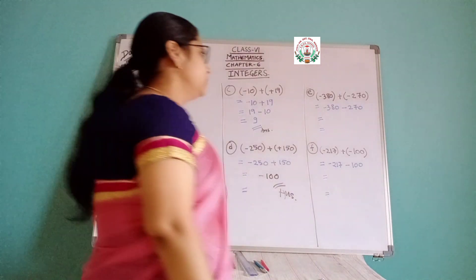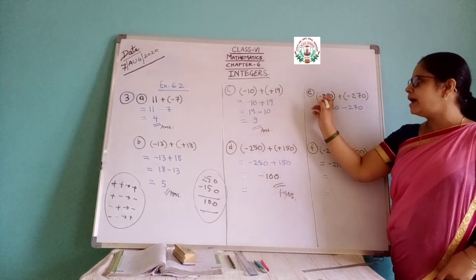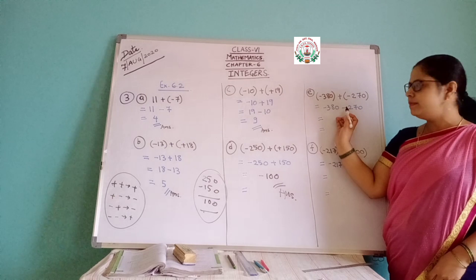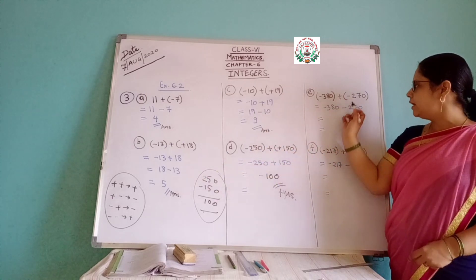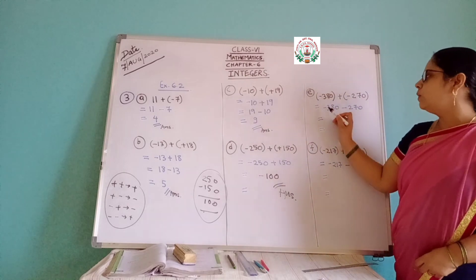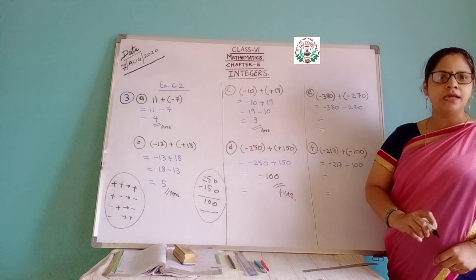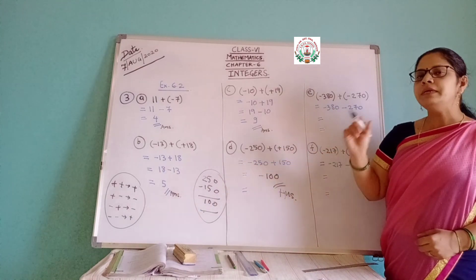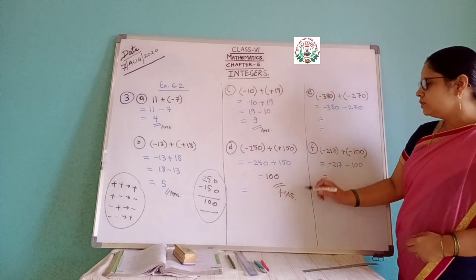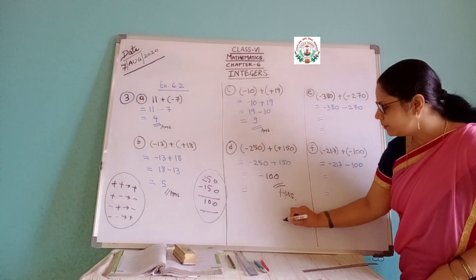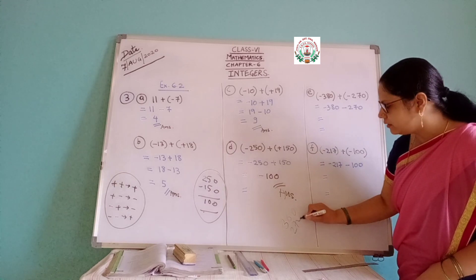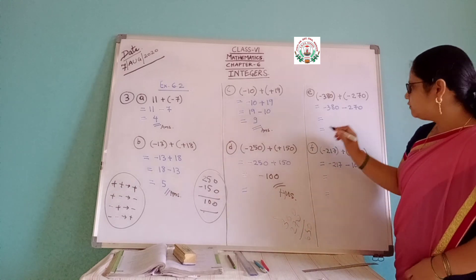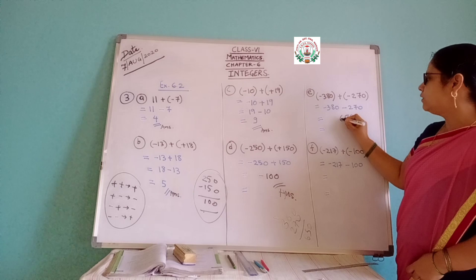Part E: minus 380 plus minus of 270. Plus and minus — different sign — so minus comes. So we have minus 380 and minus 270. Now, minus and minus — similar sign — means addition you have to do. So 380 plus 270. That gives 650.